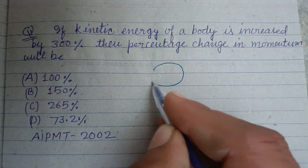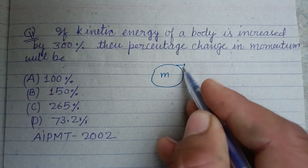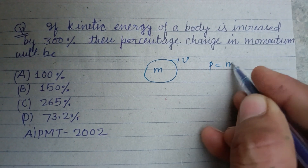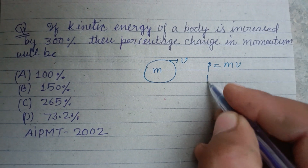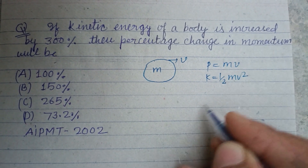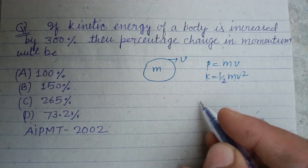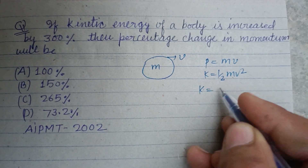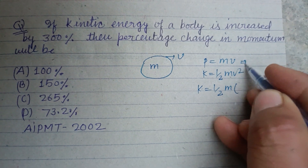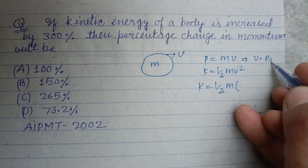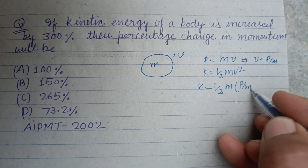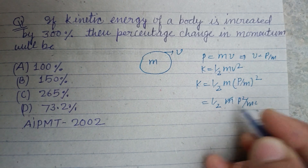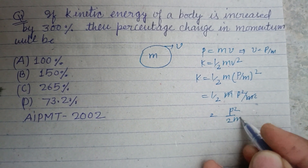So students, you know that if a body is moving with velocity V and having mass M, then its momentum is P = M × V, and kinetic energy is equal to ½MV². When we solve their relation, we substitute V = P/M, giving K = ½M × (P/M)², which simplifies to K = P²/(2M).